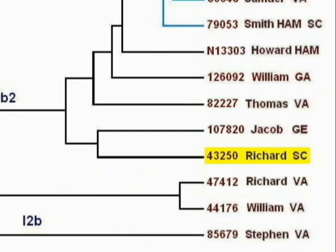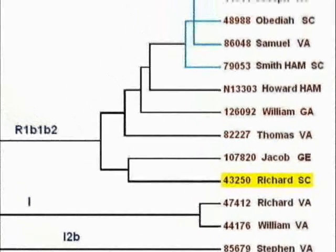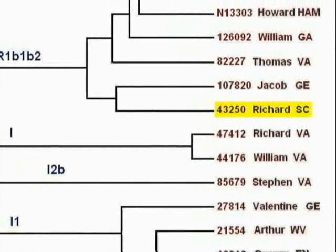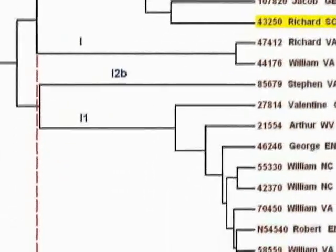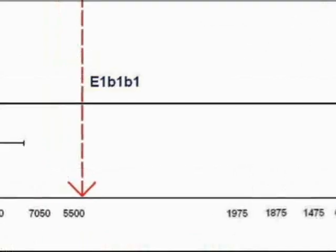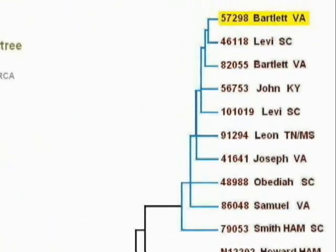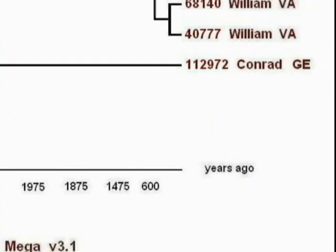Here's a slightly different example. Let's follow Richard Ham back to the time that he connects to Bartlett or Levi. This Richard is kit number 43250 from South Carolina — a completely different man than the Richard Ham of Virginia. We know that because the South Carolina Richard is haplotype group R1B1B2, and the Richard Ham from Virginia is haplotype I. We have to go back some 7,000 years before we run into their common ancestor. Following kit 43250 back to kit 57298: first, follow the horizontal line back in time to the vertical line on the far left. This tells you that kit 43250 must go back some 2,000 years before he connects to HamDNA group number 2. Next, simply follow the lines up to either Bartlett or Levi at the top of the chart.